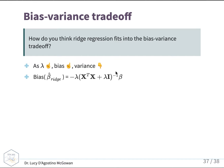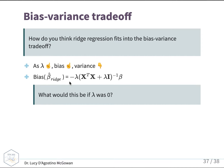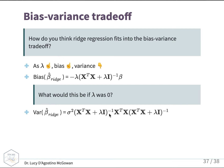I've calculated here that the bias for β̂ ridge is equal to negative lambda times (X'X + λI)⁻¹ times beta. And the variance of β̂ ridge is equal to σ² times (X'X + λI)⁻¹ times X'X times (X'X + λI)⁻¹.